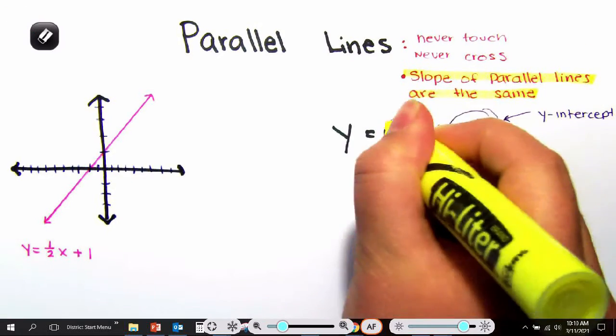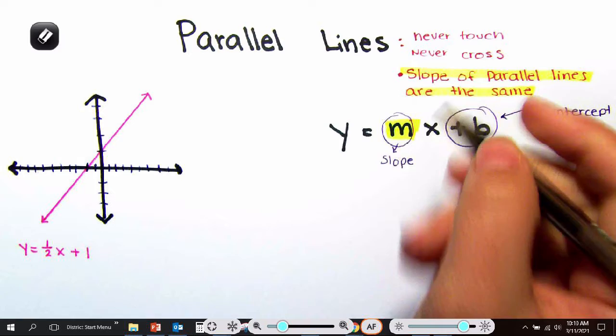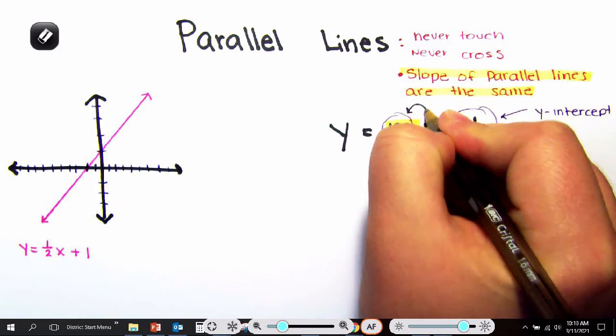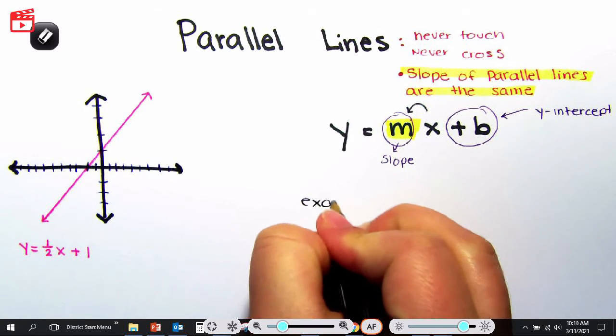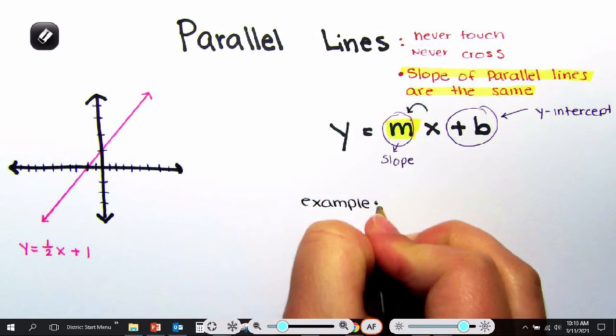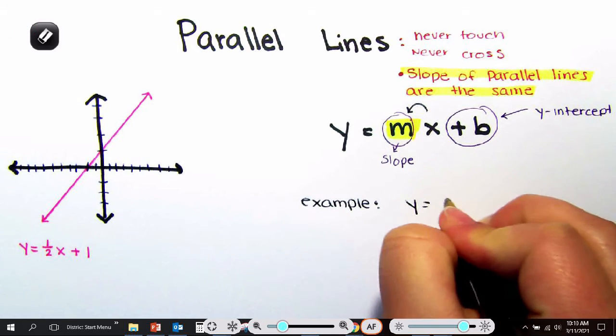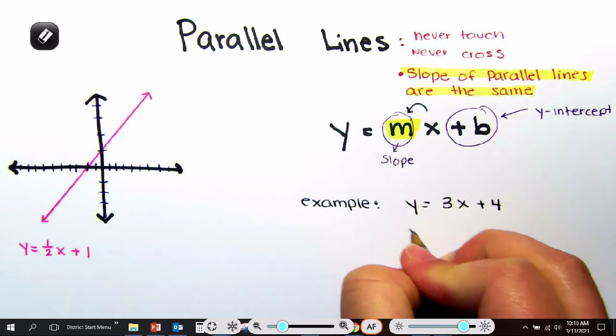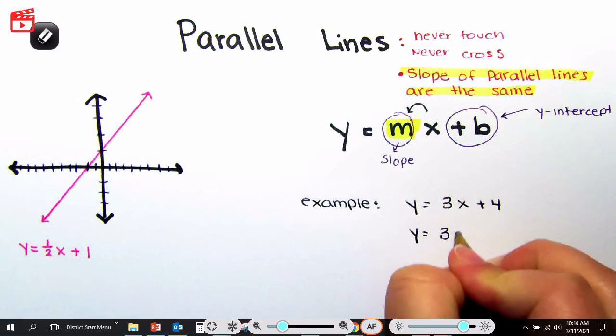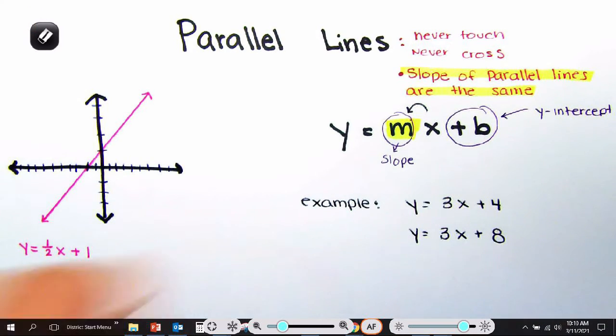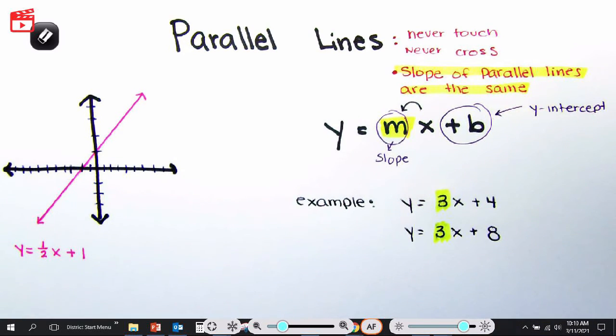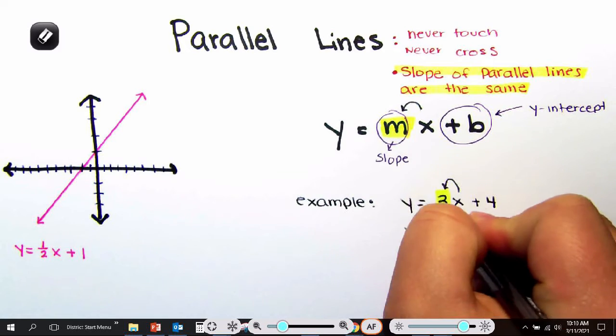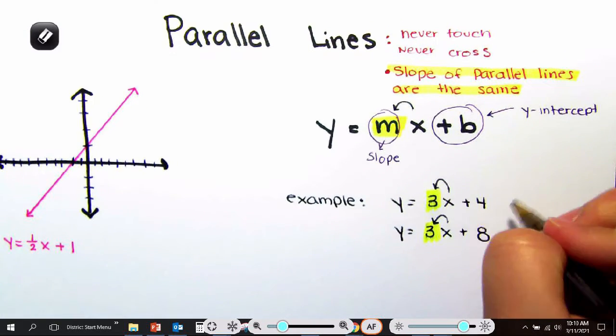Now, that means the number in front of x, if it is the same, that means you have parallel lines. So let's do an example. Let's say you have y equals 3x plus 4 and y equals 3x plus 8. Because the number in front of your x's are the same, that means that you have parallel lines.